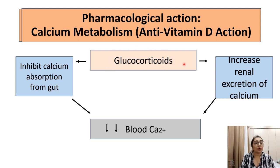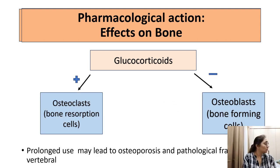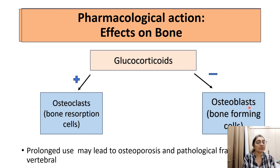Action on calcium metabolism: glucocorticoids increase renal excretion of calcium and inhibit calcium absorption from the gut, ultimately decreasing blood calcium levels. Effect on bone: glucocorticoids stimulate osteoclasts (bone resorption cells) and inhibit osteoblasts (bone-forming cells). Prolonged use may lead to osteoporosis, and pathological fractures in the vertebra and neck of the femur can occur.